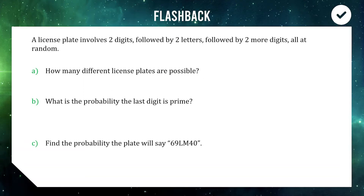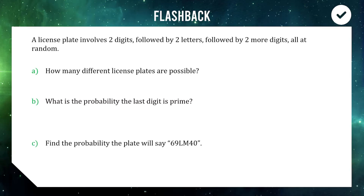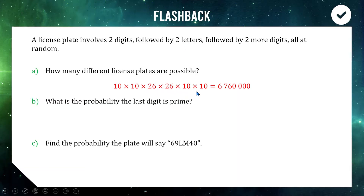We're going to think of this as a six-stage event: the first two stages are digits, then two letters, then two more digits. At each stage we calculate how many different options there are and multiply them all together. For our two digits we have ten options each (zero through nine), for our letters we have 26 options each.